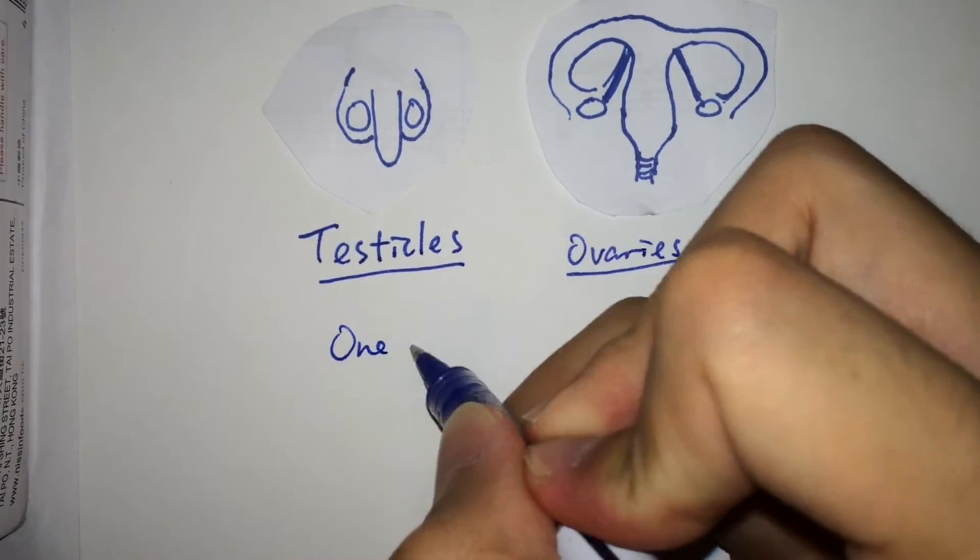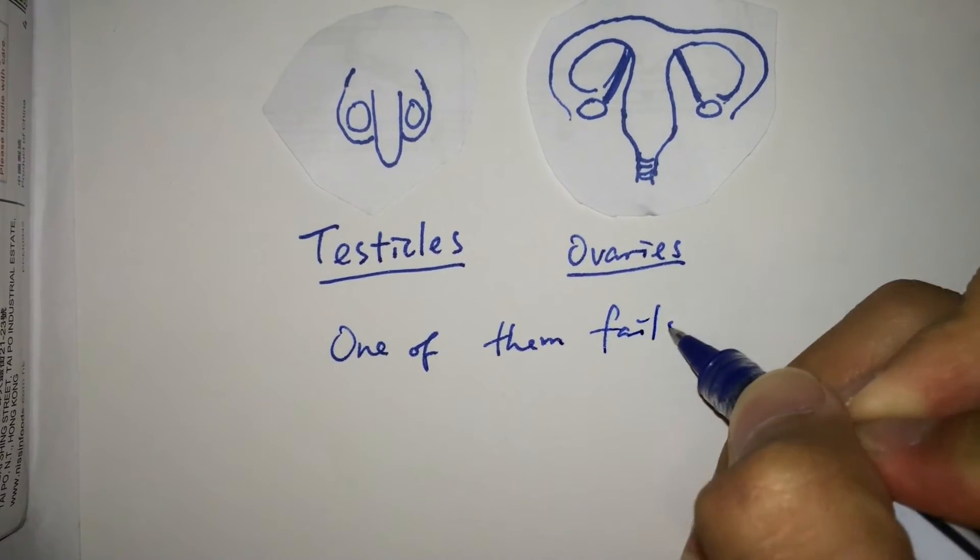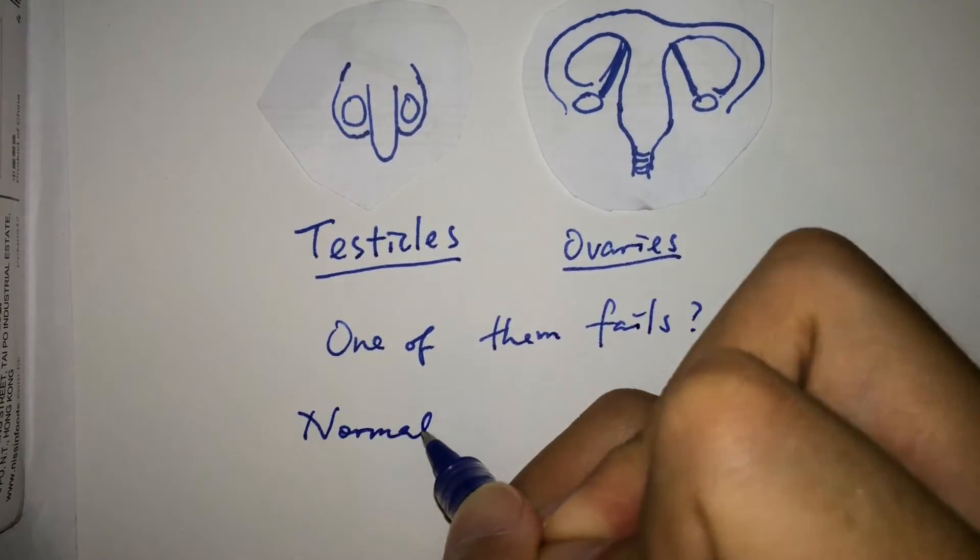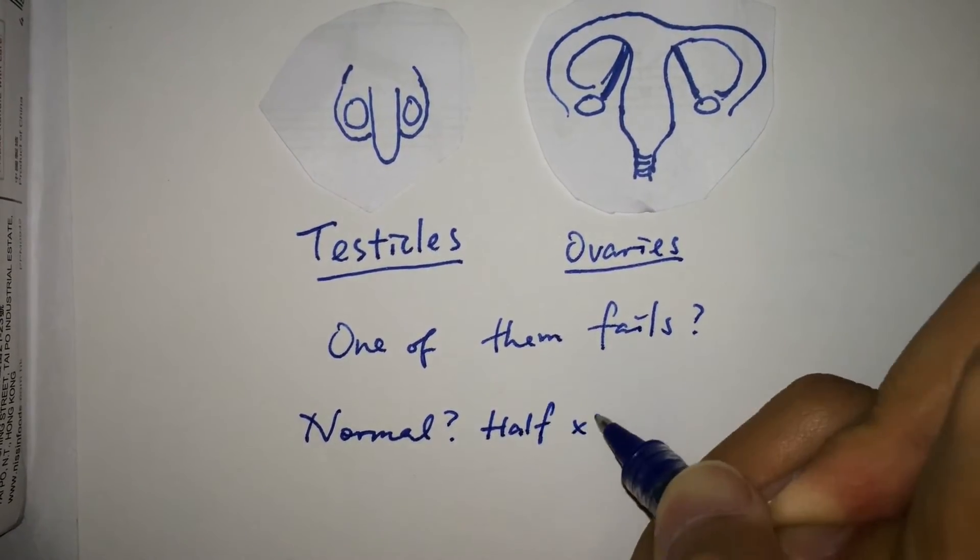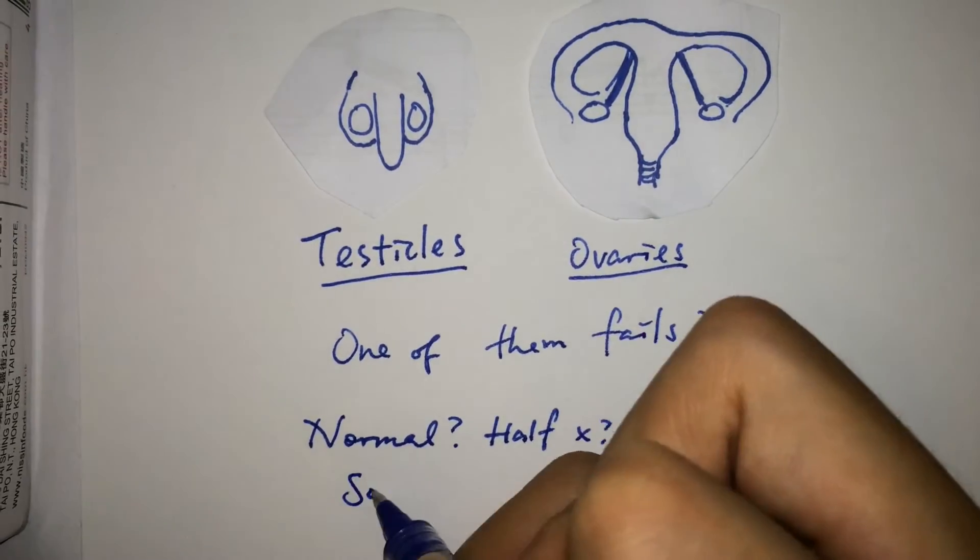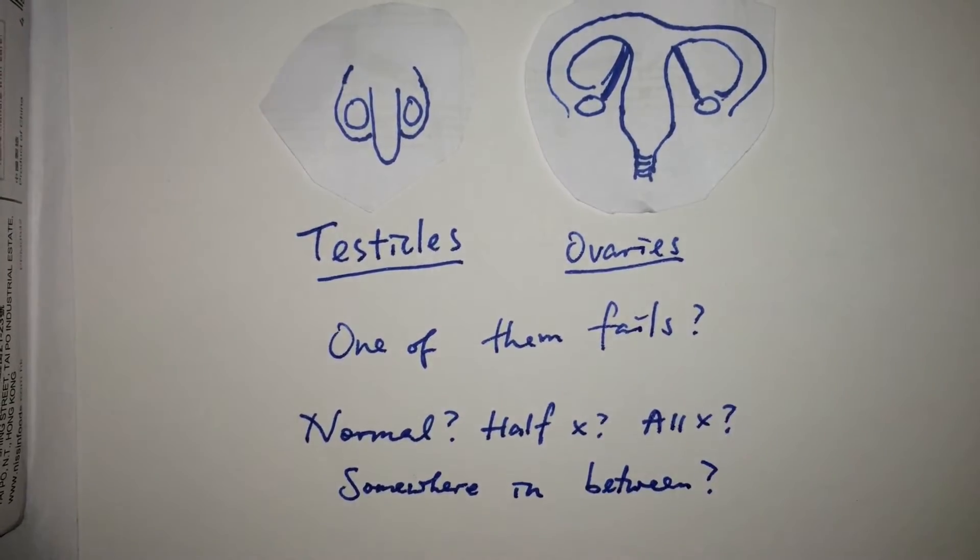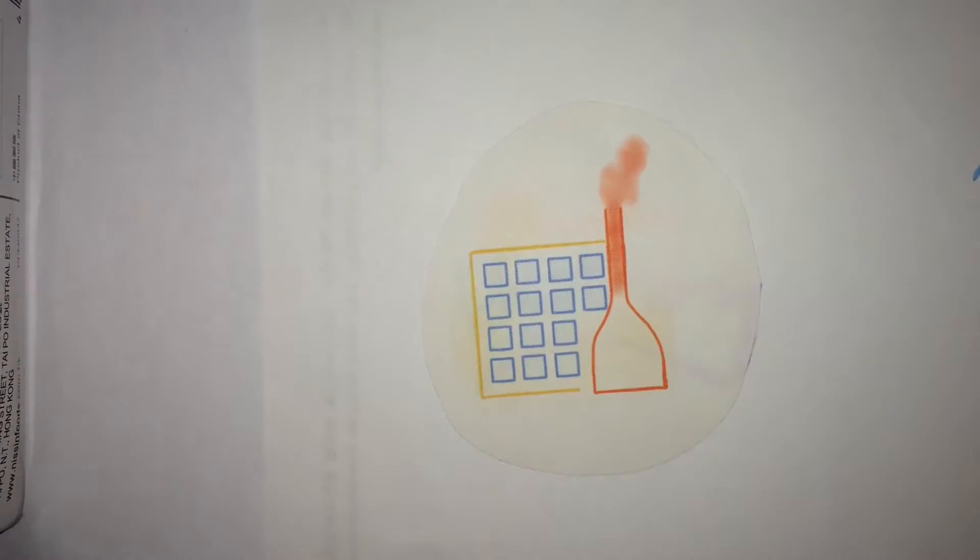But have you ever thought what will happen if one of them fails? Will you be normal and just fine, will you lose just half of your function or all of it, or somewhere in between? Let's find out in the Random Facts Theory.